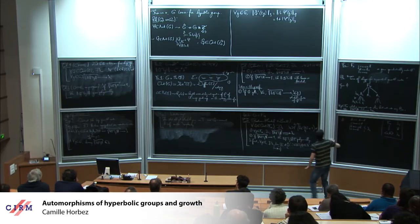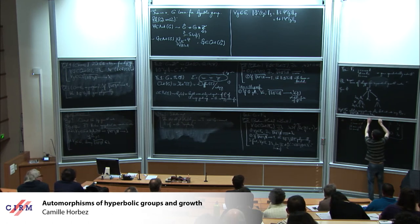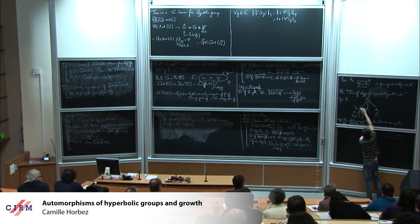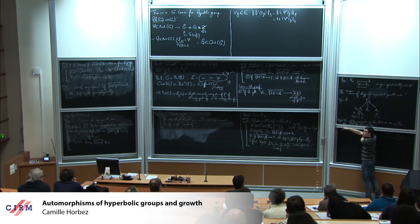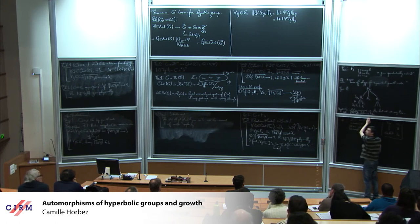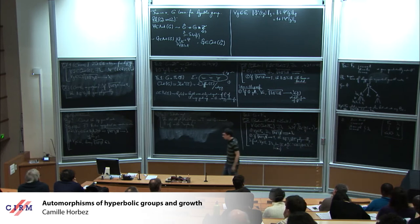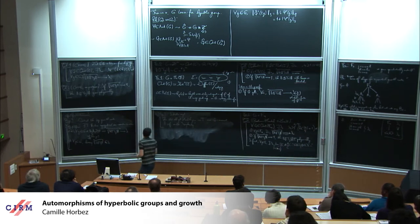Once you've detected the maximal exponential growth rate, you're left understanding elements that live in point stabilizers of the tree T. This is done by an induction argument: all point stabilizers in T are phi-invariant and have smaller complexity — in the free group case, complexity would be rank, and point stabilizers have rank strictly smaller than N. Because of this decrease in complexity, you can restrict phi to each point stabilizer and by induction find the growth rates in restriction to each of them. This concludes the proof of the theorem, and gives the tree-of-subgroups structure.